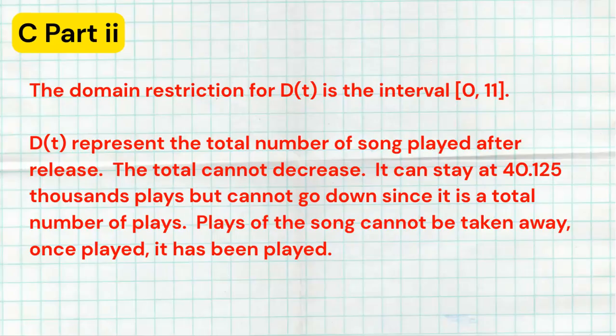And that's exactly what I wrote here. The domain restriction for the model D(t) is the interval 0 to 11. D(t) represents the total number of songs played after release. The total cannot decrease. It can stay at 40.125 thousand plays, but it cannot go down since it's a total number of plays. Plays of the song cannot be taken away. Once it's played, it has been played. So hopefully that makes sense.